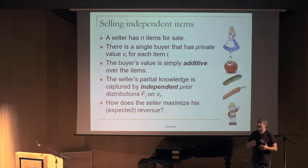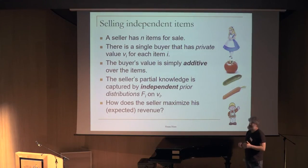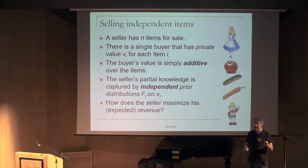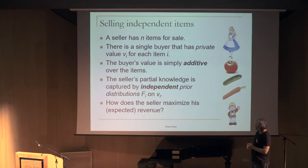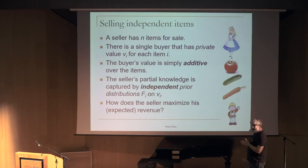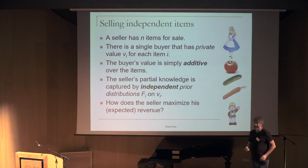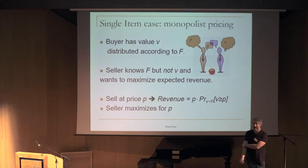We capture the seller's partial information by a distribution F_i describing where v_i comes from — either as the seller's subjective belief or as a large market survey result. We assume the distribution of values is on each item separately and they are independent of each other. The question is how the seller maximizes revenue selling these items.